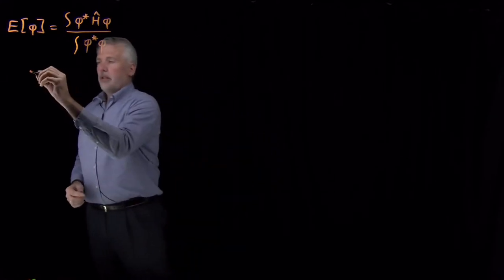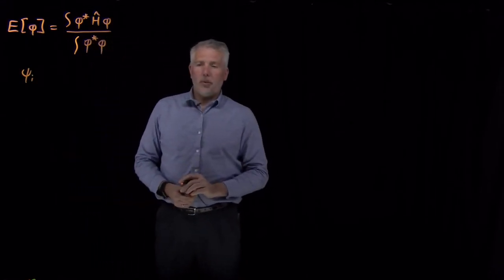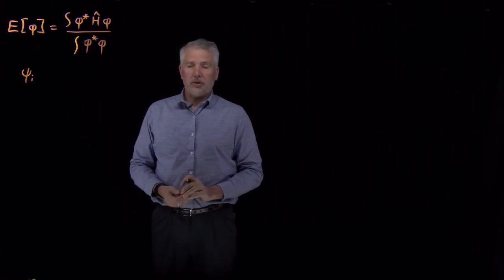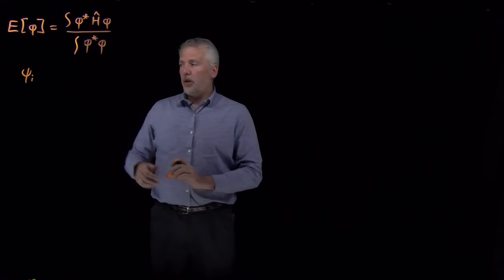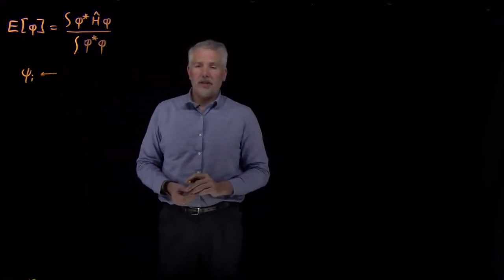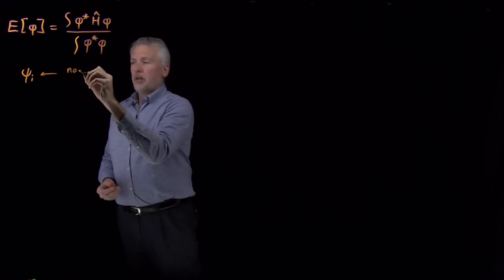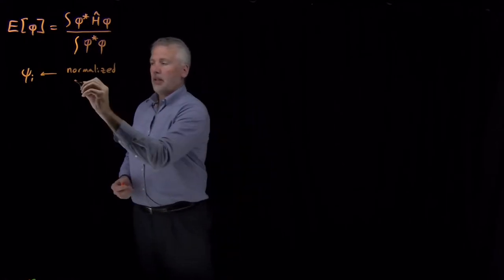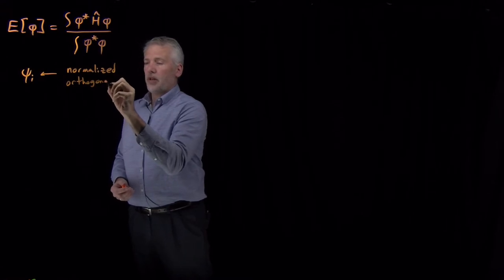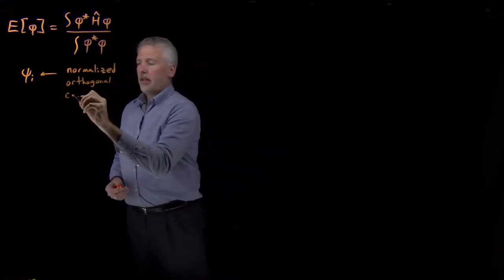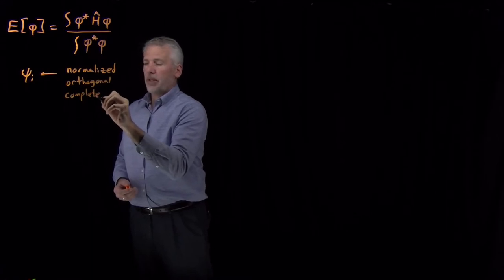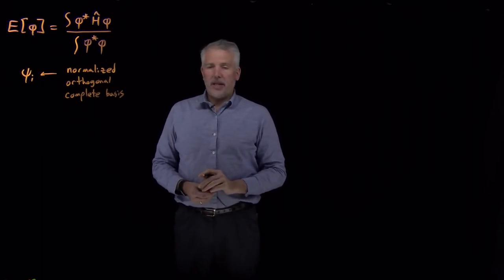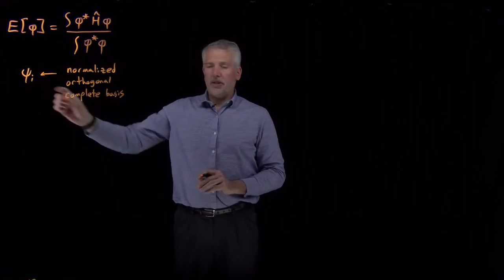The other thing that we know about wave functions — if we have a set of wave functions, these are the true wave functions that actually do solve Schrodinger's equation for a problem, whether we know what they are or not — the true wave functions, if we remember the postulates of quantum mechanics, have several properties. We can always normalize the wave function, so we can assume the wave functions are normalized. We can also write those wave functions in a way that they're orthogonal to one another. The postulates of quantum mechanics also tell us that those wave functions are a complete basis set.